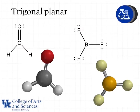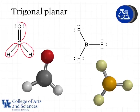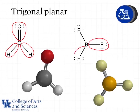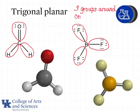Next we'll look at trigonal planar geometry, which is characterized by having three groups around the central atom. In CH2O, there are two groups with the hydrogen atoms and a third group with a double bond to oxygen — the double bond counts as one group, giving a total of three groups. The lone pairs on oxygen are not relevant to the geometry around the central atom. We can also look at BF3, which has three single bonds giving three groups, so its geometry is also trigonal planar.